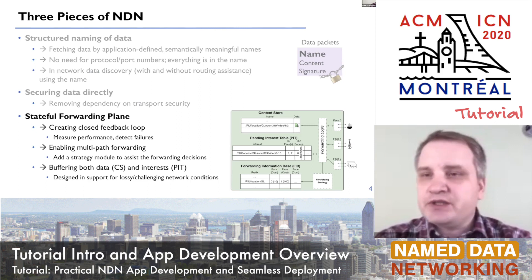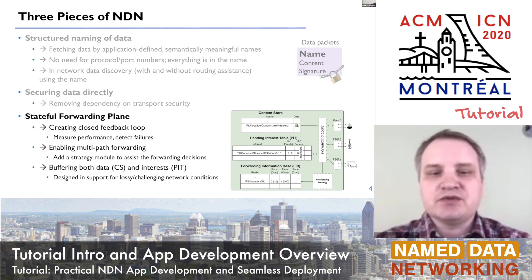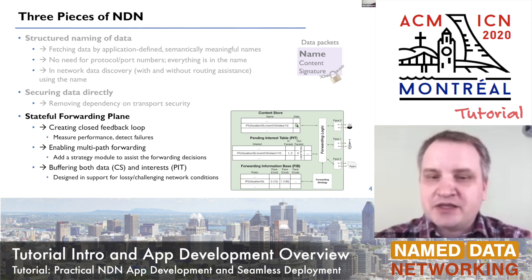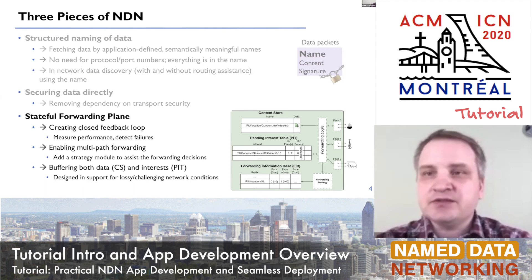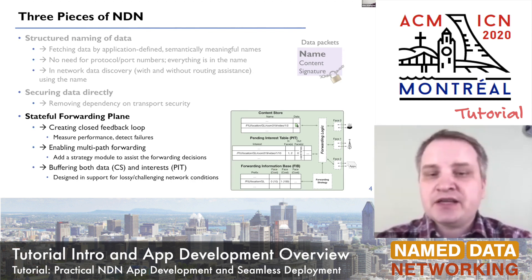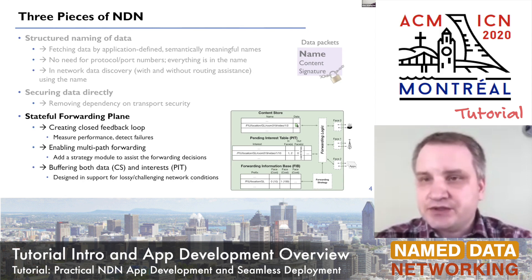Doing multipath forwarding — because of the stateful forwarding plane, you don't care about where you're sending a packet. Additionally, the data structures of the stateful forwarding plane provide buffering for data in the form of CS, or interests in the form of PIT, and you can actually do a lot of things natively, like communicating over lossy or challenging networking environments.